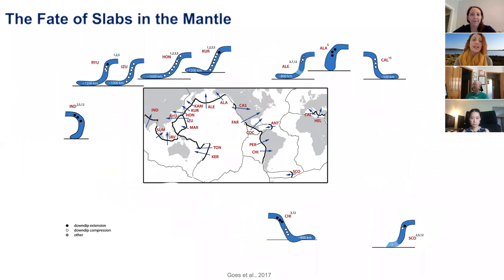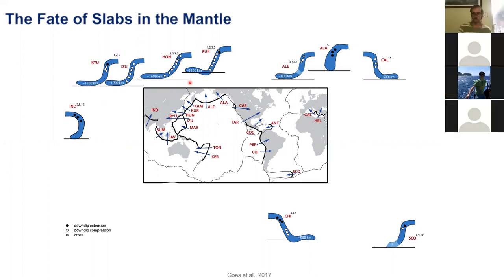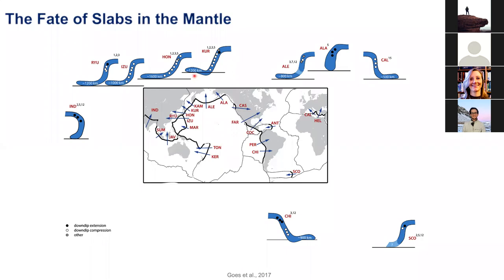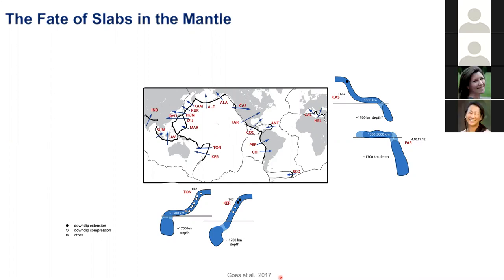On the other end of the spectrum, we have flattened slabs at 660 km depth — slabs that deflect in the mantle transition zone, and these roughly make up half of the slabs observed in seismic tomography models. And then finally, we also have slabs that are fragmented or broken.